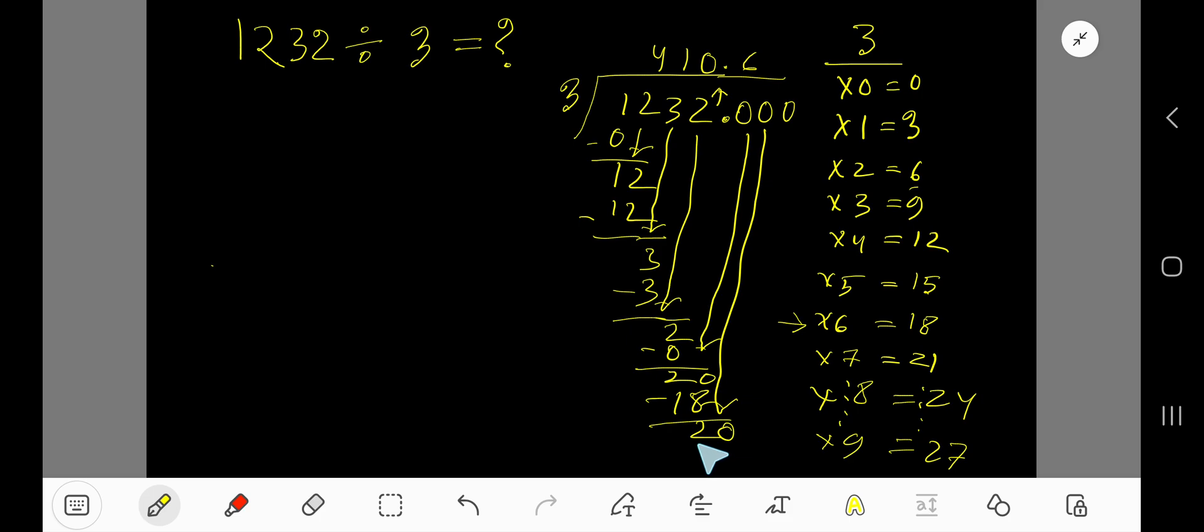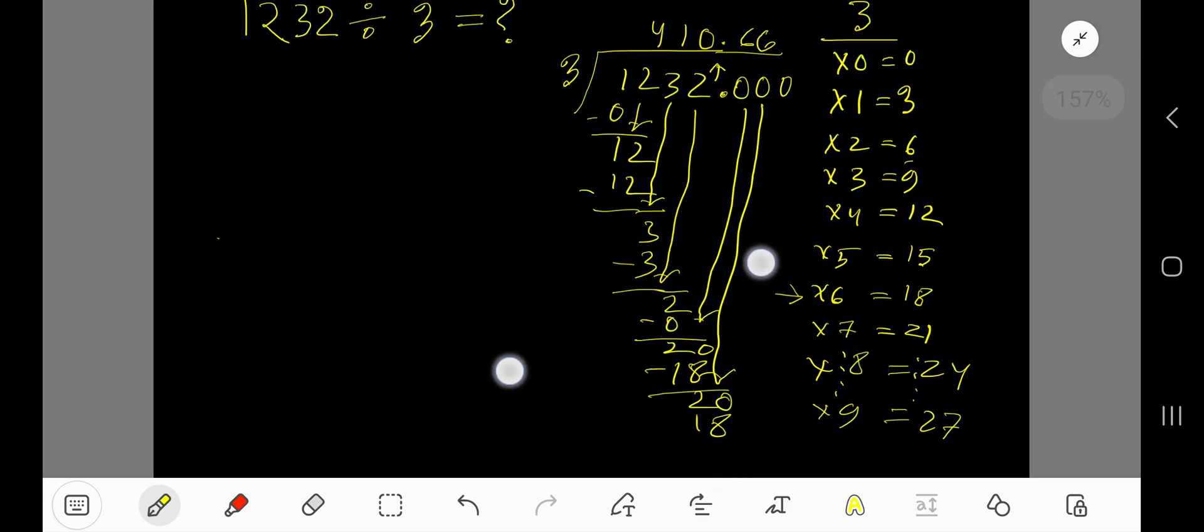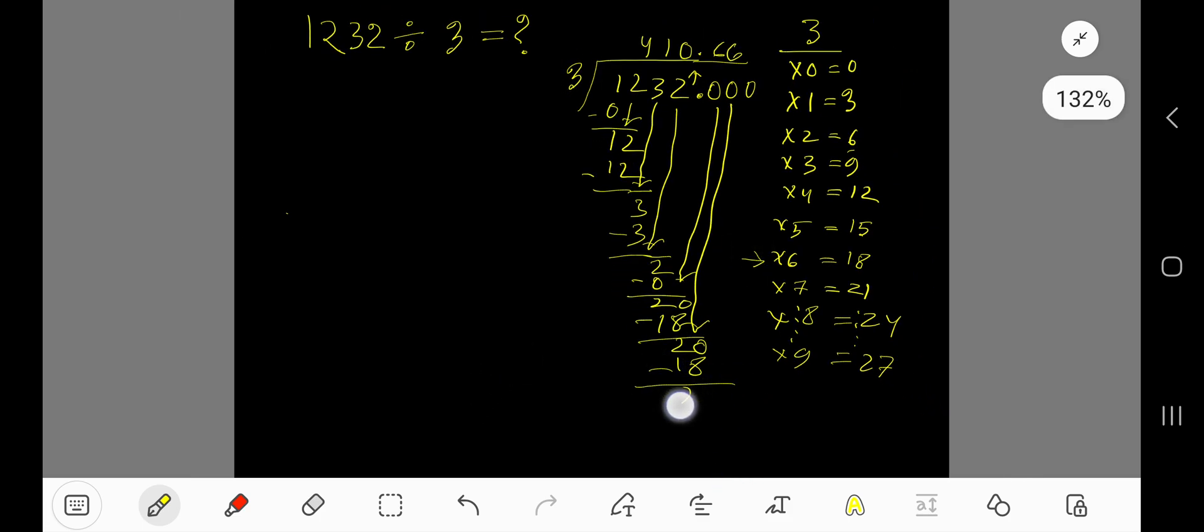Bring down next 0. 3 goes into 20 how many times? Again 6 times. 6 times 3 is 18. Subtract, you are getting 2. Bring down this 0. 3 goes into 20, again 6 times. 6 times 3 is 18. Subtract 2.